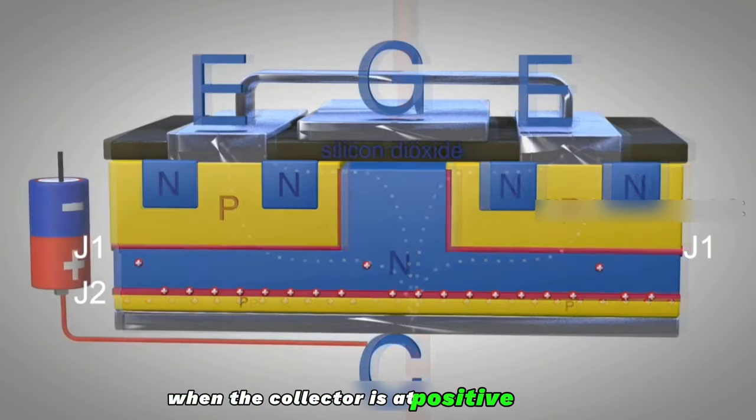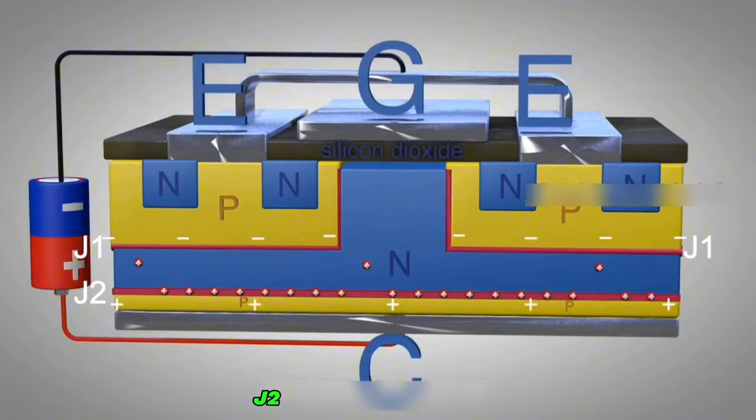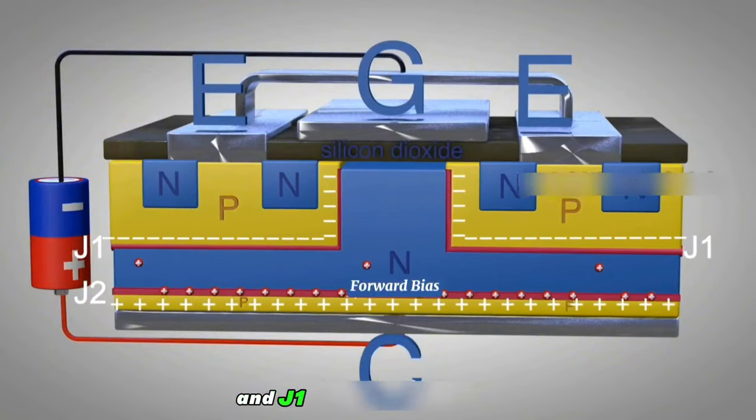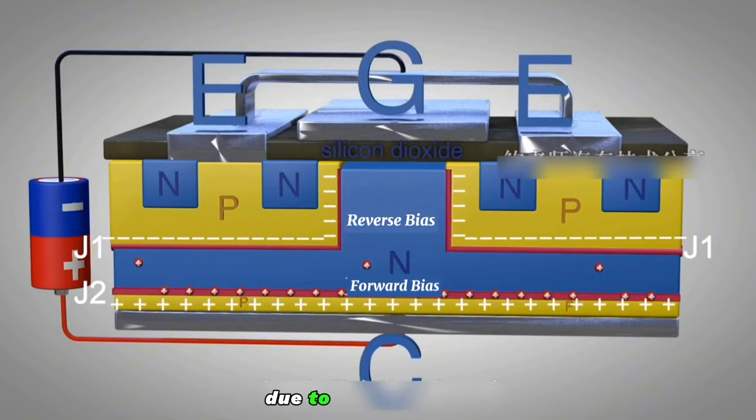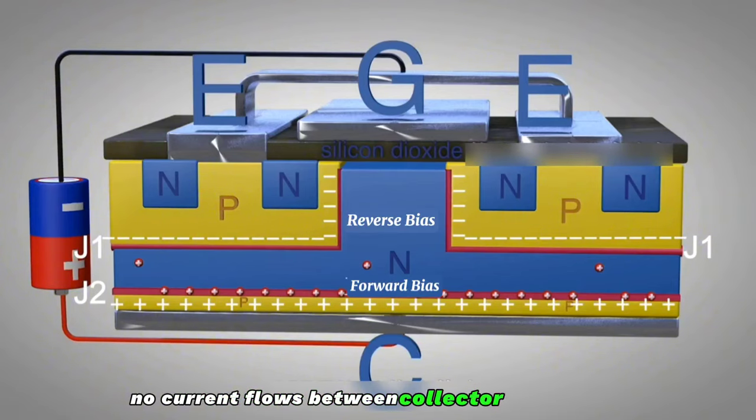When the collector is at positive voltage and the emitter is at negative voltage, J2 forms a forward bias and J1 forms a reverse bias. When no voltage is applied to the gate, due to J1 reverse bias, IGBT is turned off. No current flows between collector and emitter.